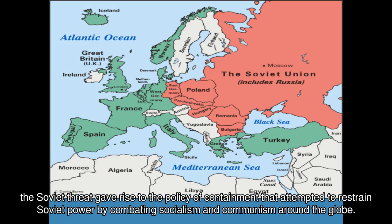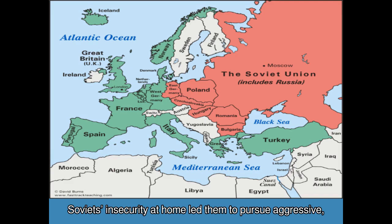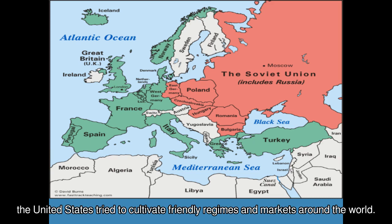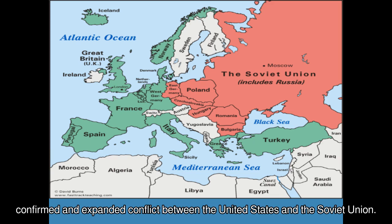Containment and global politics: the Soviet threat gave rise to the policy of containment that attempted to restrain Soviet power by combating socialism and communism around the globe. Soviets' insecurity at home led them to pursue aggressive, expansionist policies abroad, which made negotiations impossible. Using arms and dollars, the United States tried to cultivate friendly regimes and markets around the world — manifest in the Marshall Plan and later in aid programs providing assistance to newly liberated third-world countries — confirming an expanded conflict between the United States and the Soviet Union.